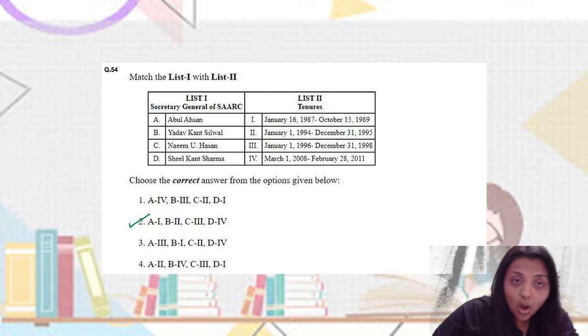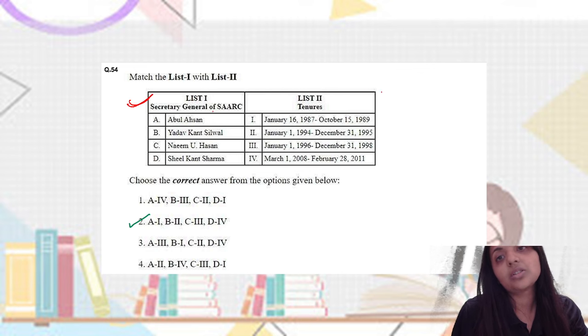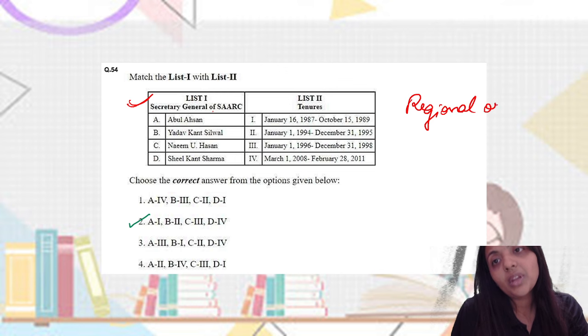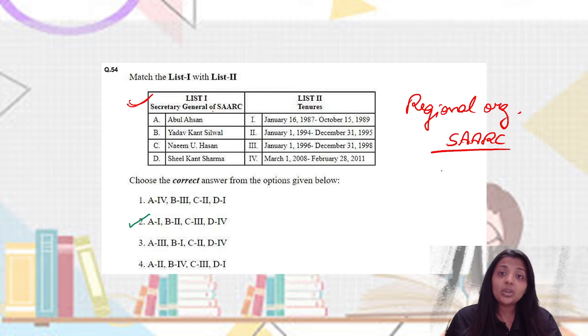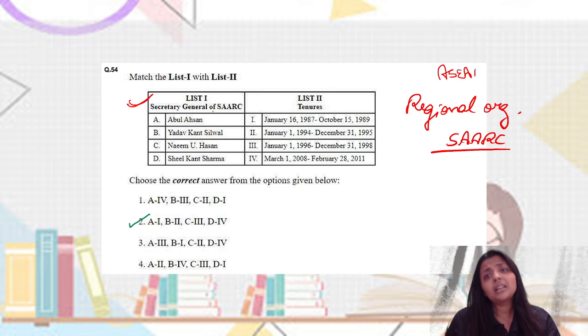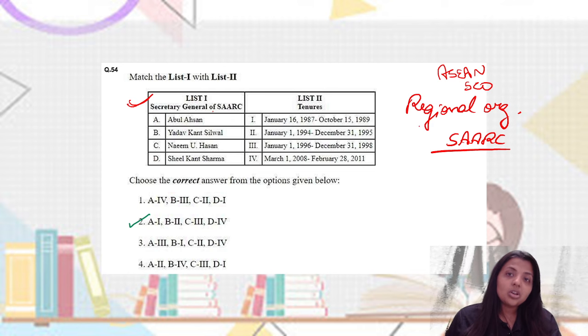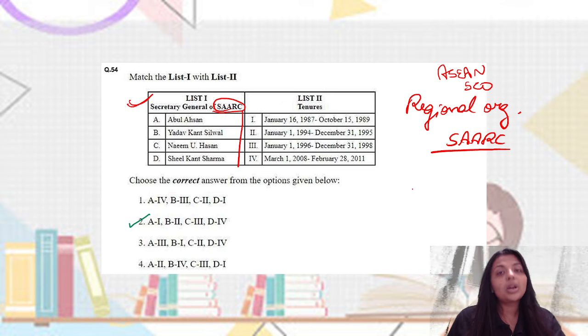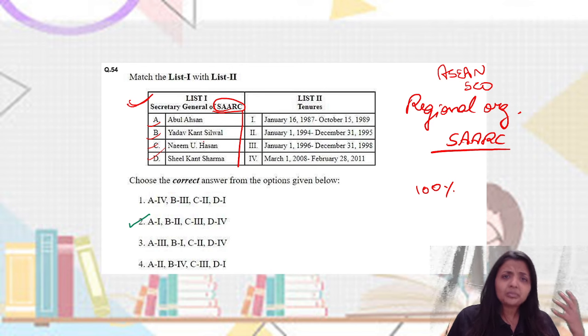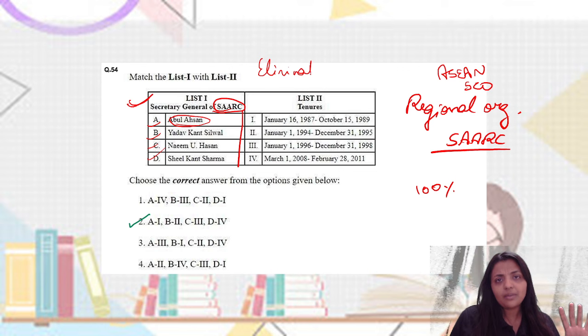Then obviously a very unconventional topic was the secretary of SARK. So we see regional organizations and if I'm talking about SARK, we have to see all general secretaries because all regional organizations, ASEAN and SCO also. These small regional organizations are very difficult to remember. If you don't attempt, there's no negative marking, so you should solve all 100% questions, but you should take these things one time.